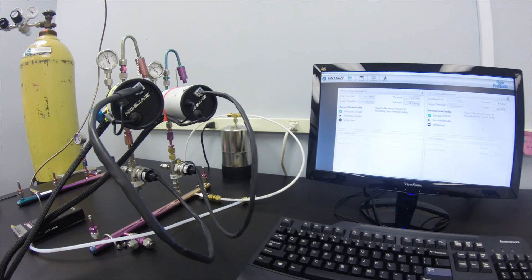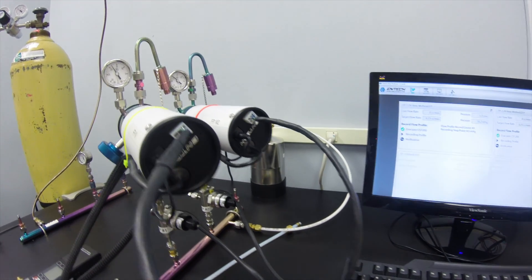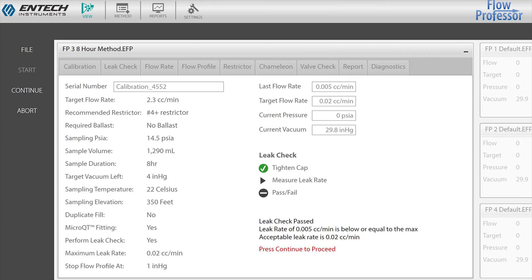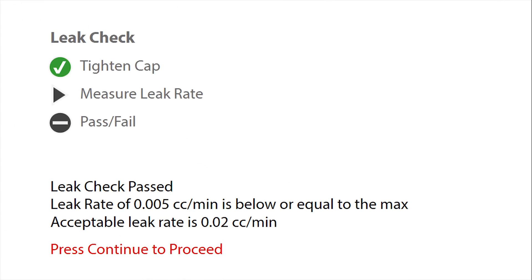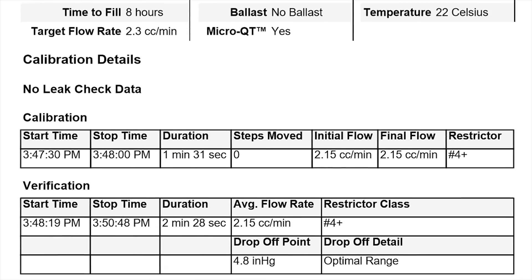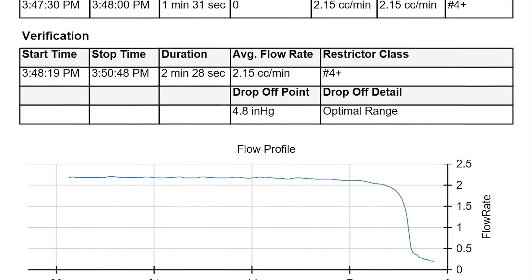We utilize a computer-controlled system that automates the complete calibration process for sampling into canisters. This system automatically checks the flow controller for leaks, adjusts the flow to match the requested sampling time, and finally checks the flow profile to verify the flow controller will sample as expected.